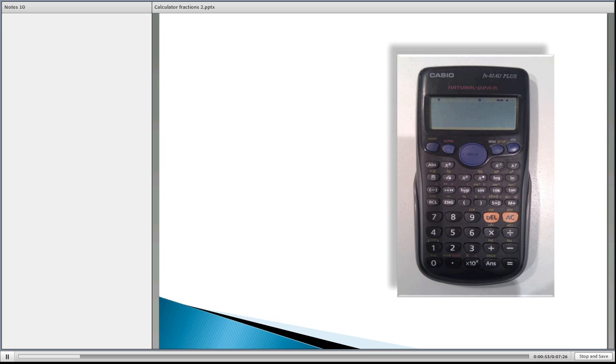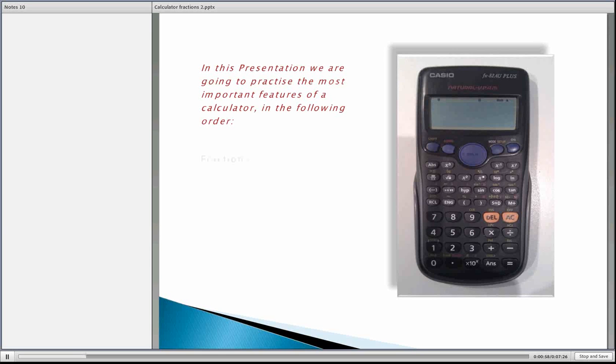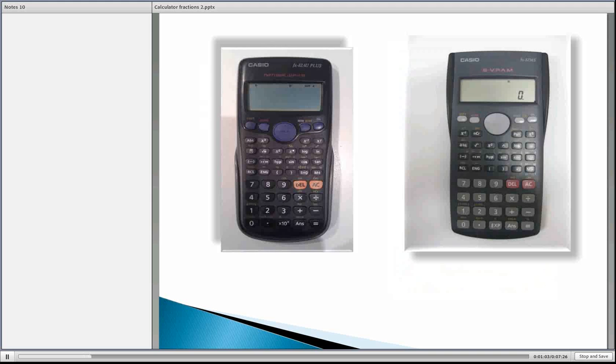We use the Casio calculators here at OTEN Engineering Services and in this presentation we're going to be looking at fractions, how to put that into your calculator. The left hand side is a Casio FX82AU Plus and on the right hand side is an FX82MS which is an older version but throughout our presentations here we refer to both of those calculators.